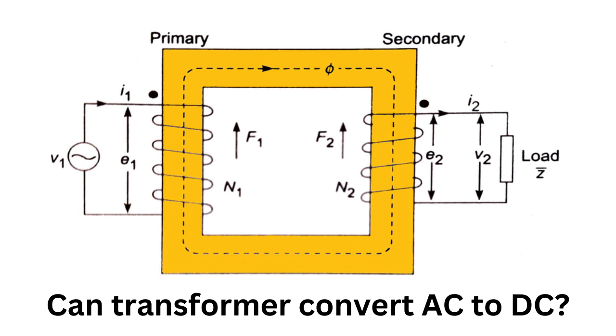When it comes to electricity, there are two types of current: alternating current (AC) and direct current (DC).